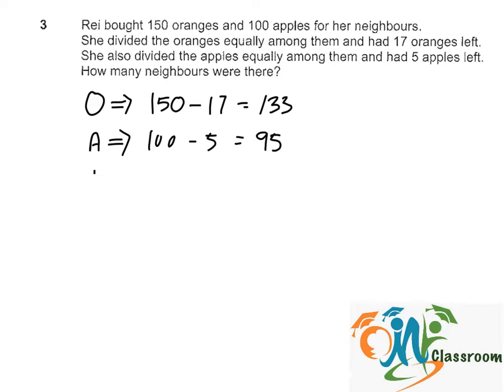So for 133, what are the factors? We can list them out. It will be 1 times 133 and also 7 times 19. So 133 has got 4 factors: 1, 7, 19 and 133.